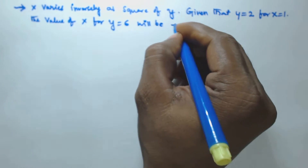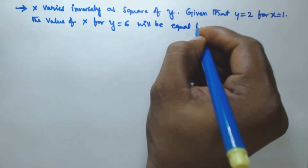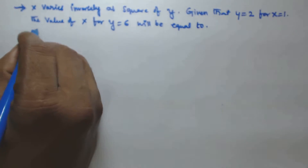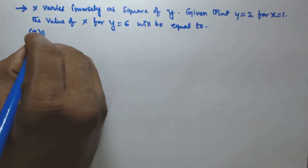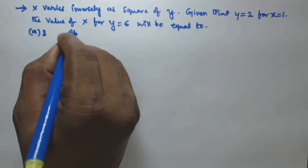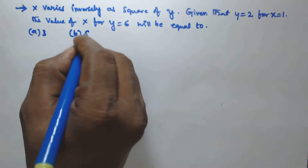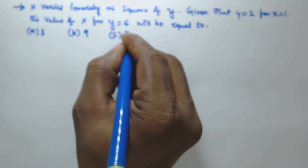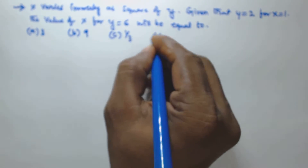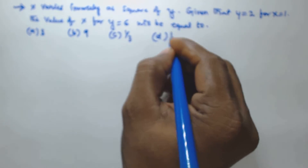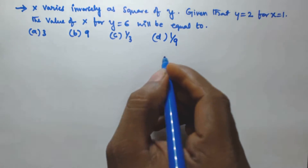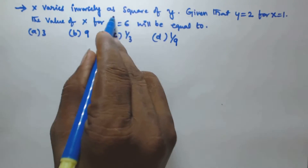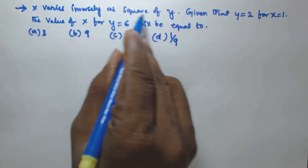The options given are: option a is equal to 3, option b is 9, option c is 1 by 3, and option d is 1 by 9. So it is given that x varies inversely as square of y.